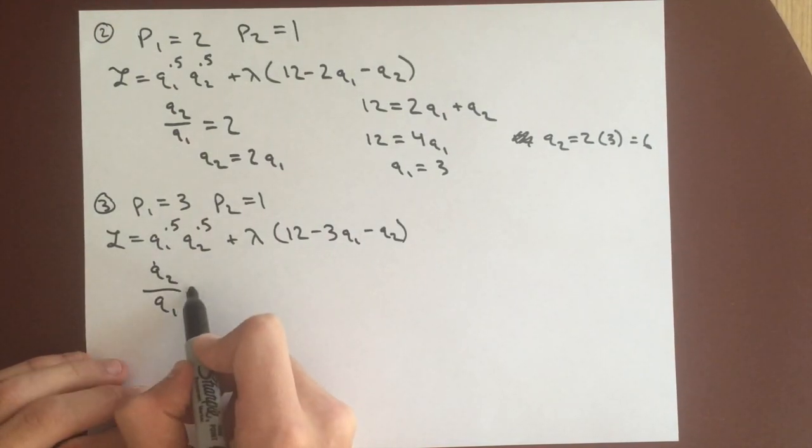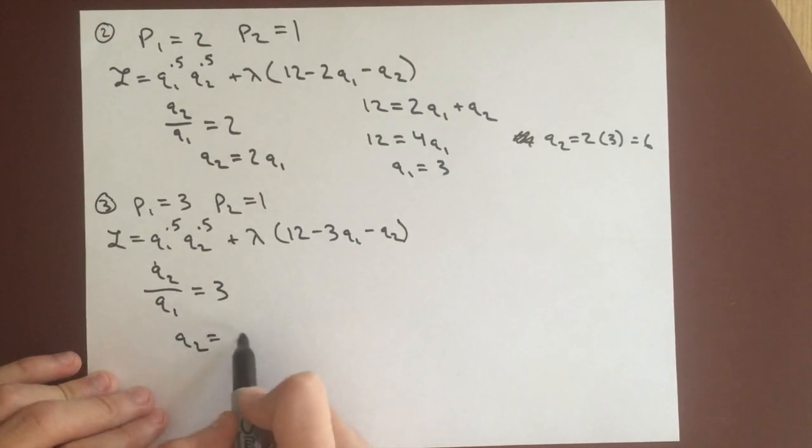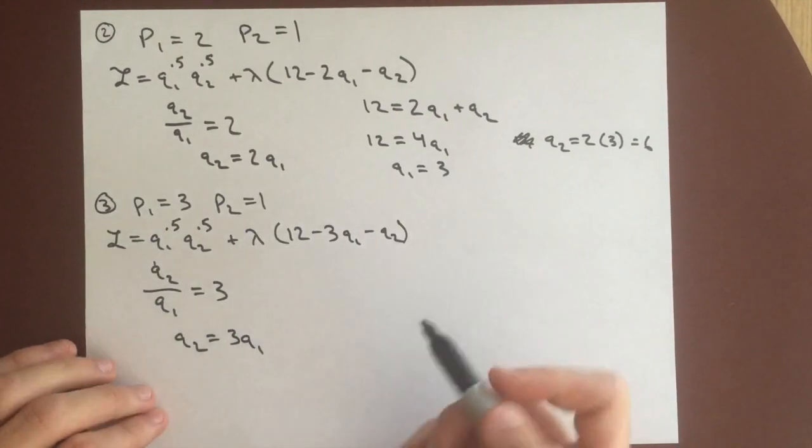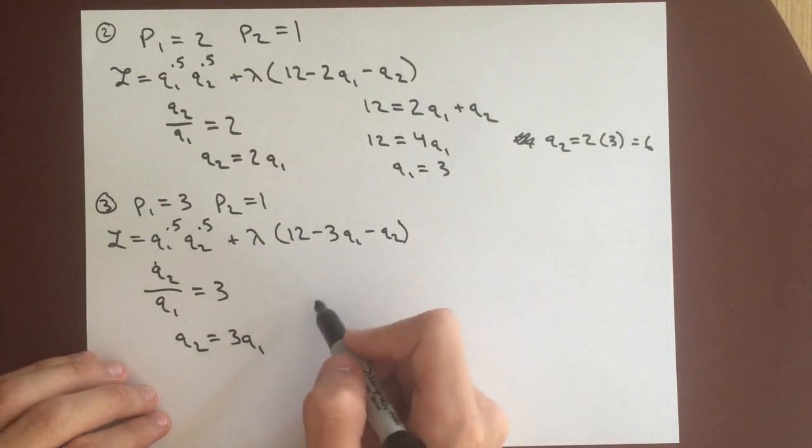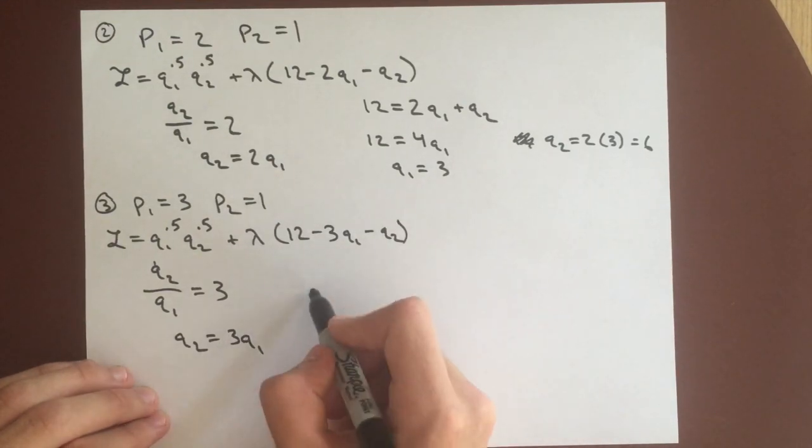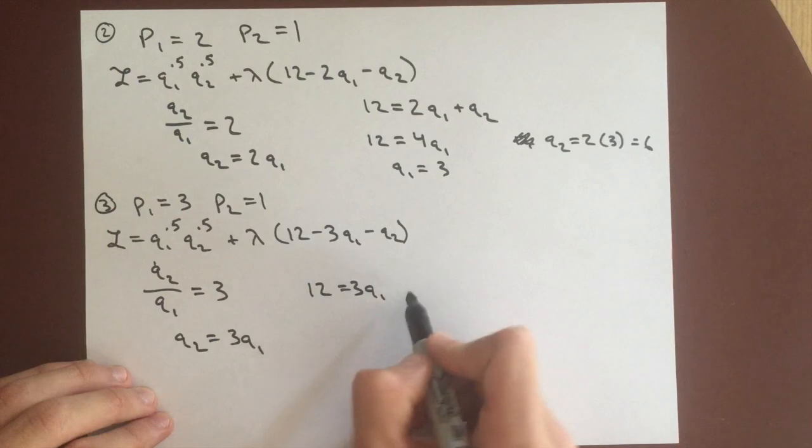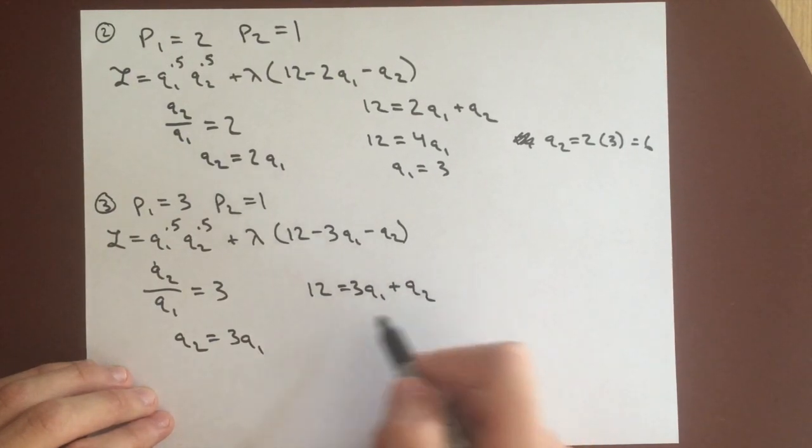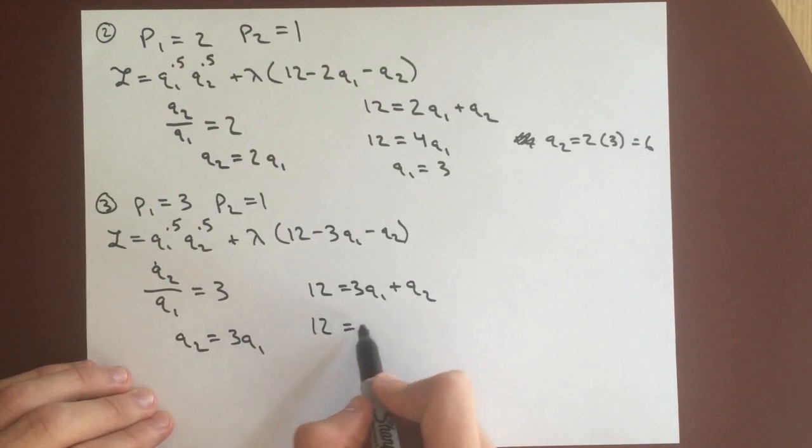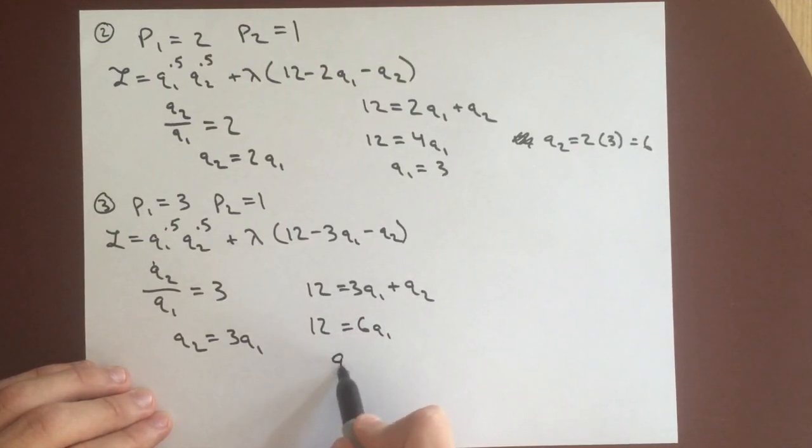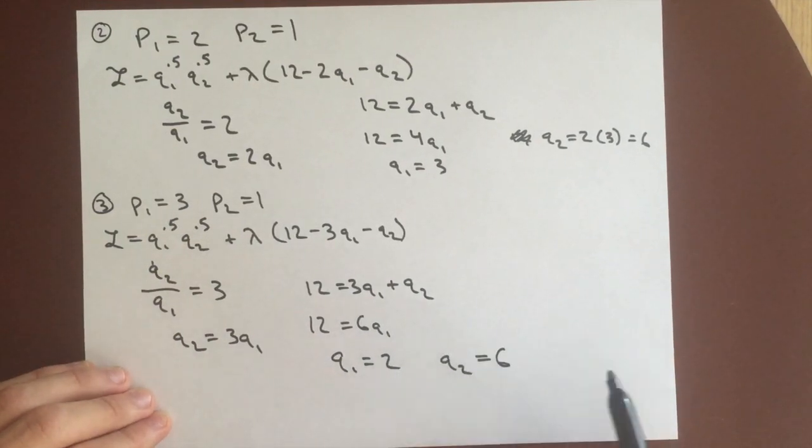And we can get the partial derivatives, divide them again, and get q2 over q1 equals 3. So q2 equals 3q1, and our budget constraint will be 12 equals 3q1 plus q2. So we know q2 equals 3q1, 12 equals 6q1, so q1 equals 2, and q2 equals 3q1, so q2 equals 6.